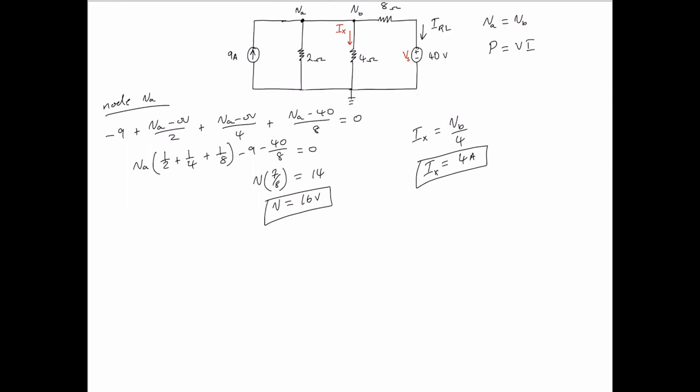Now power supplied is negative, and thus we need to find the current flowing into the 40 volt source. We already described that, thus we say that the current in the right loop is equal to